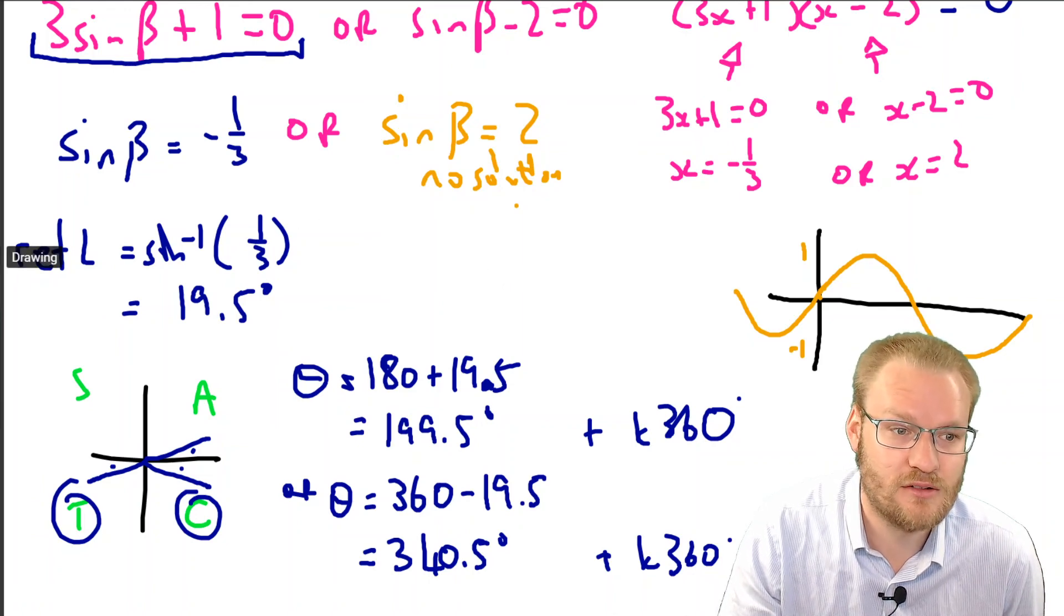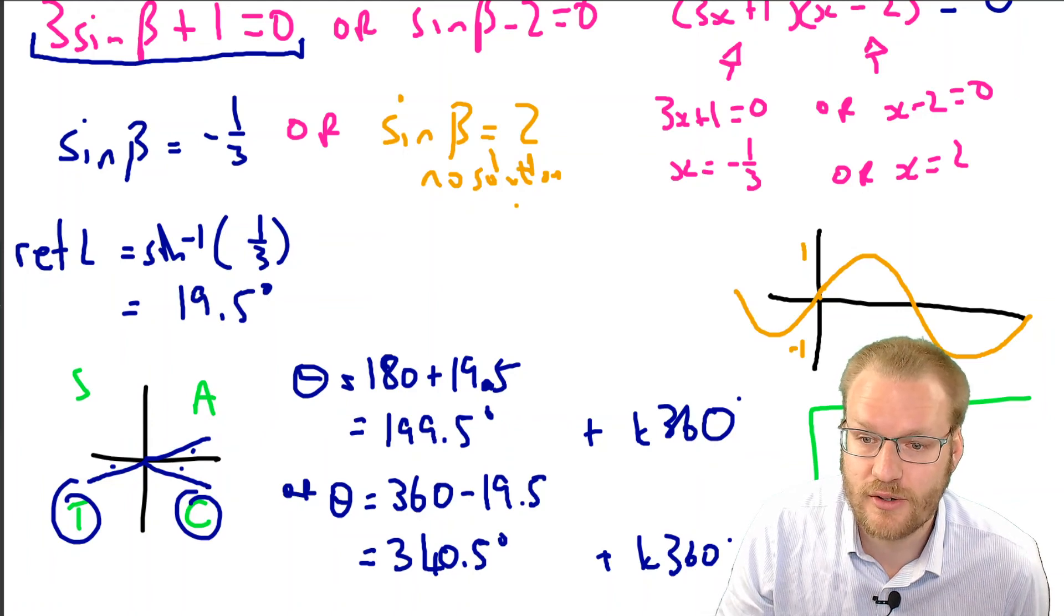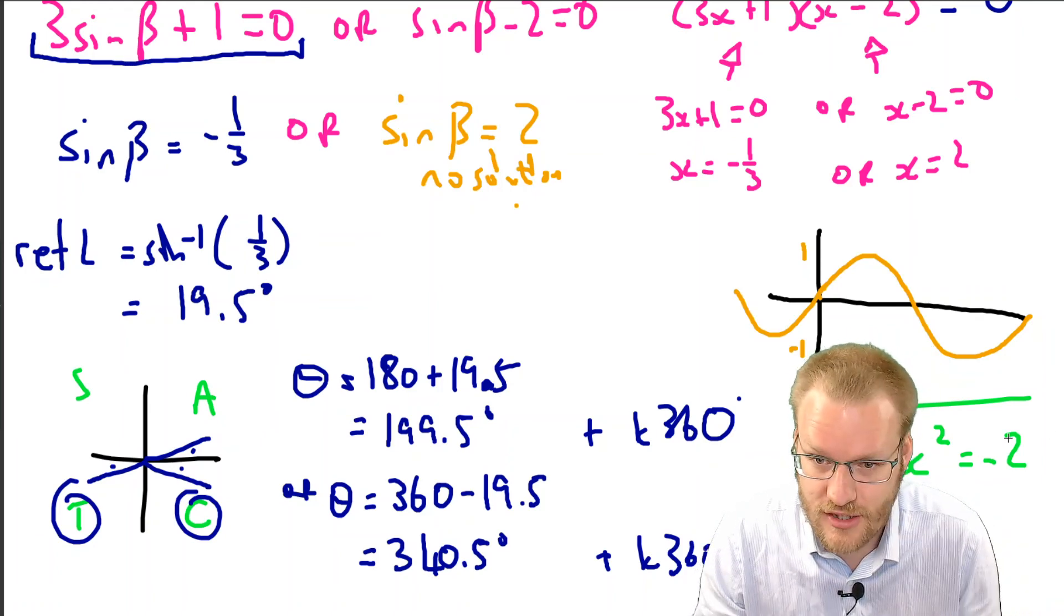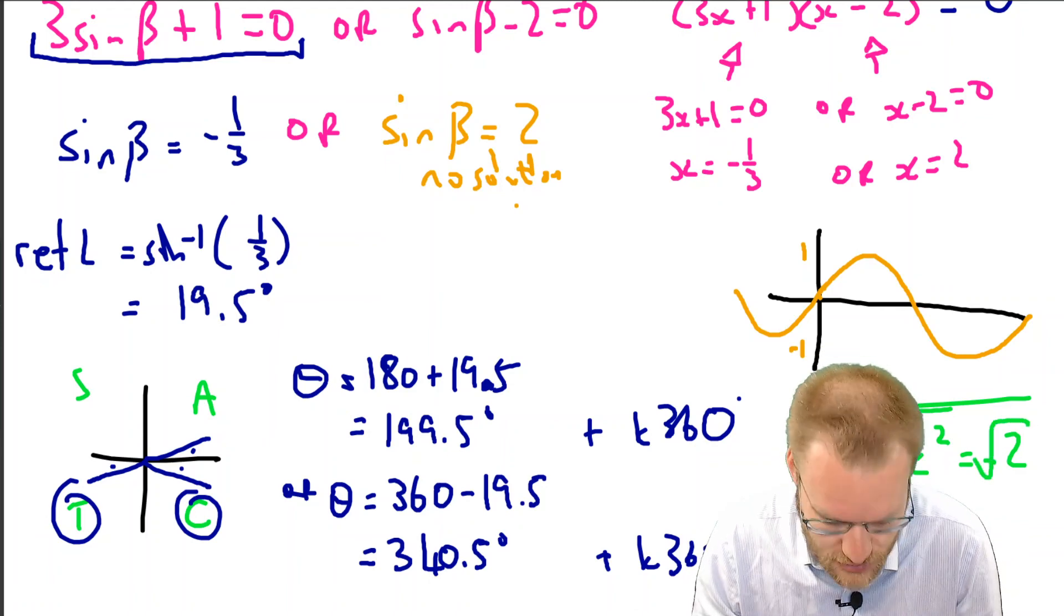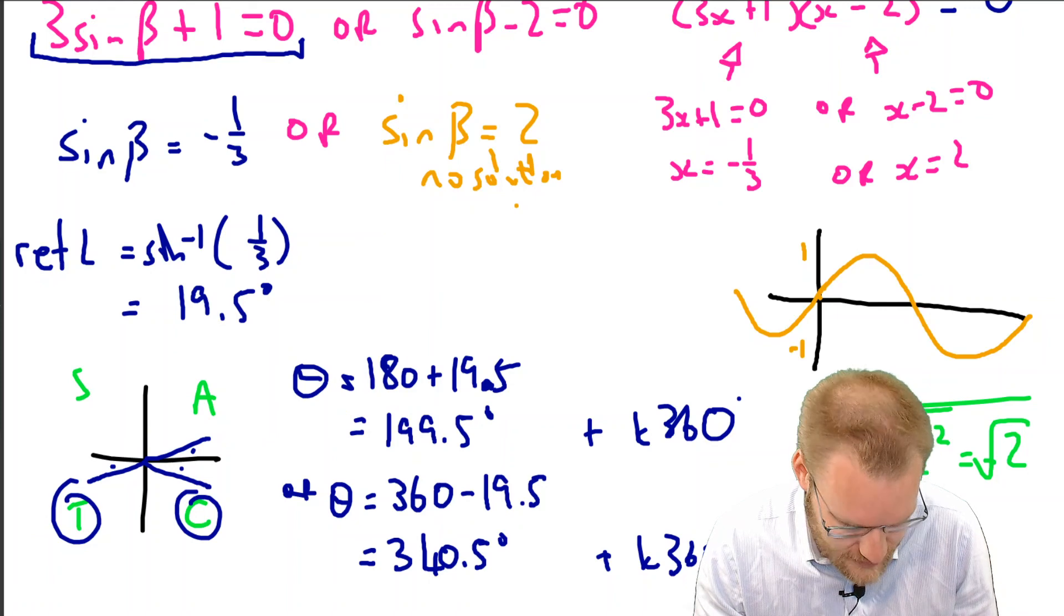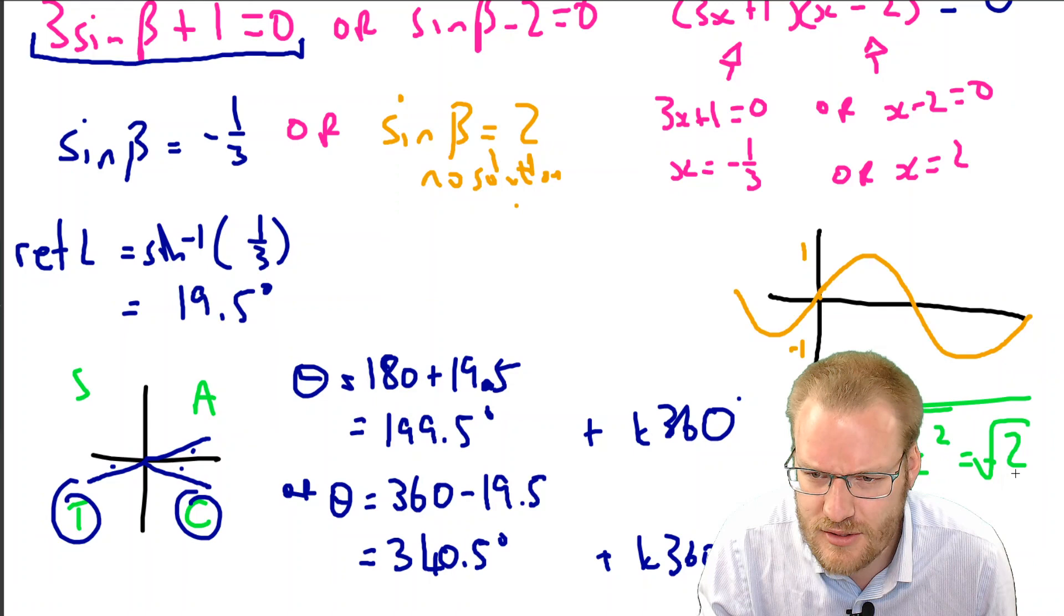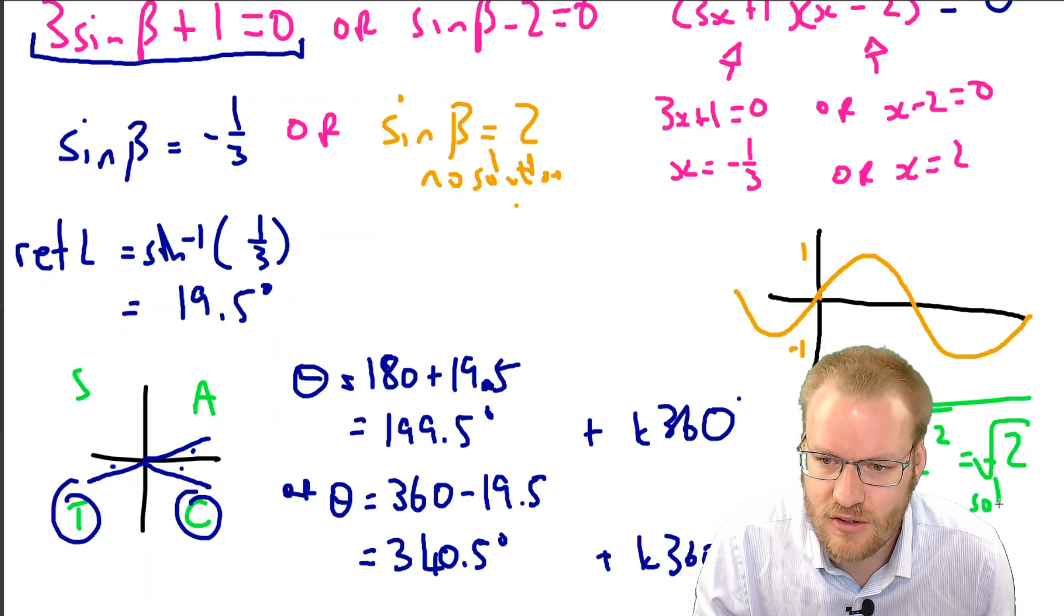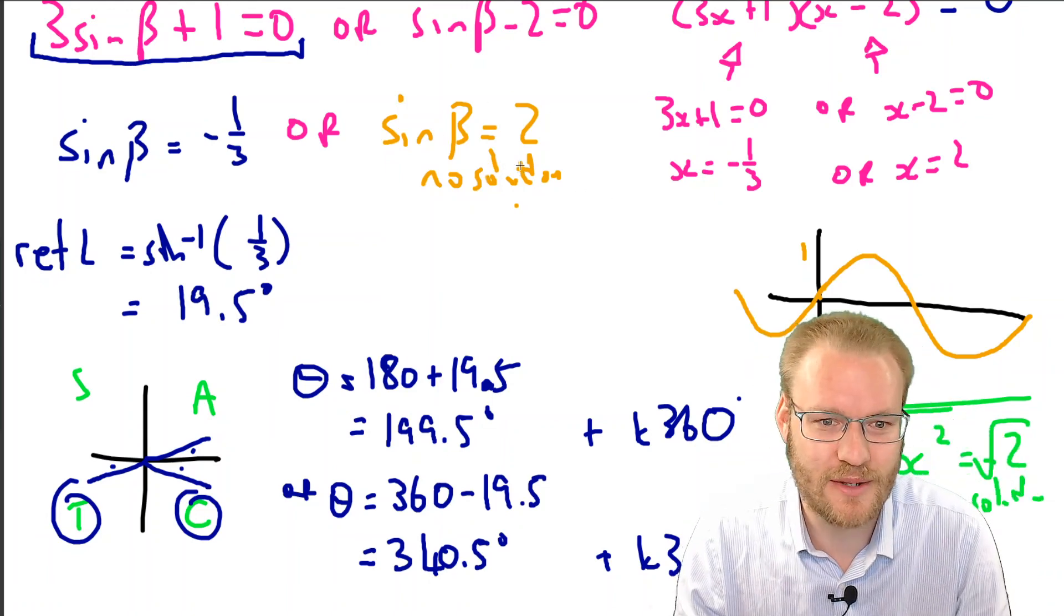This is similar to if you got an equation that said x² = -2. You would diligently go square root both sides, and you'd get math error. Engage brain cell: something squared equals negative, not in the real number system. So you would have said no solution. It's like that where this bit didn't make sense.